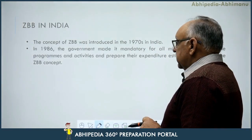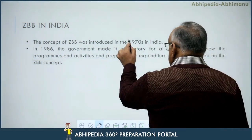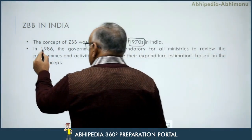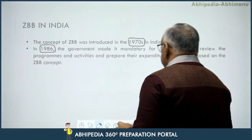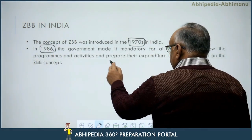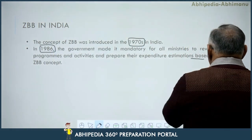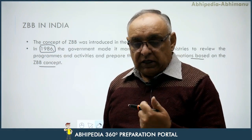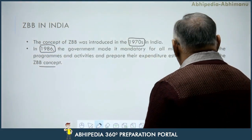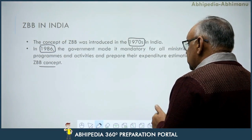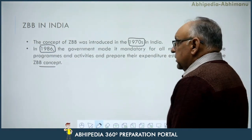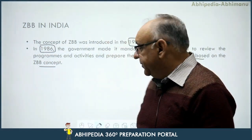As far as zero-based budgeting in India is concerned, this approach was introduced in India in the 1970s. Then in 1986, the government made it mandatory for all ministries to review their programs and activities and prepare their expenditure estimates based on the zero-based budgeting concept. From 1986 onwards, it became mandatory for all ministries and departments of the Government of India to review programs and activities and make expenditure estimations on the basis of zero-based budgeting.